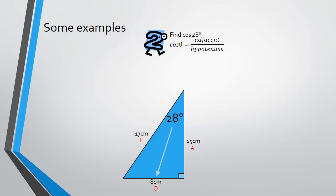So the cos ratio is cos theta equals adjacent over hypotenuse. Now in this situation, we're going to replace theta with 28 degrees. And the adjacent side is 15 and the hypotenuse is 17. So we should get cos 28 equals 15 over 17.